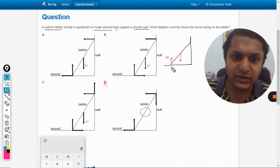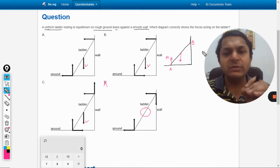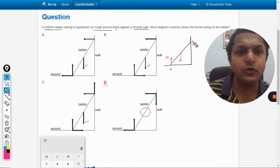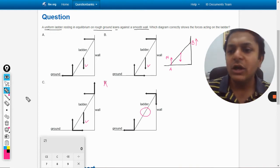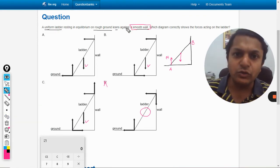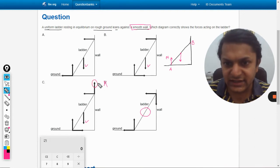And at this point, let us name these points A and B. So at point B there is a possibility that if there was a friction there, there will be a frictional force in the upward direction also. But it is given that the wall is smooth, so there will be no upward force.